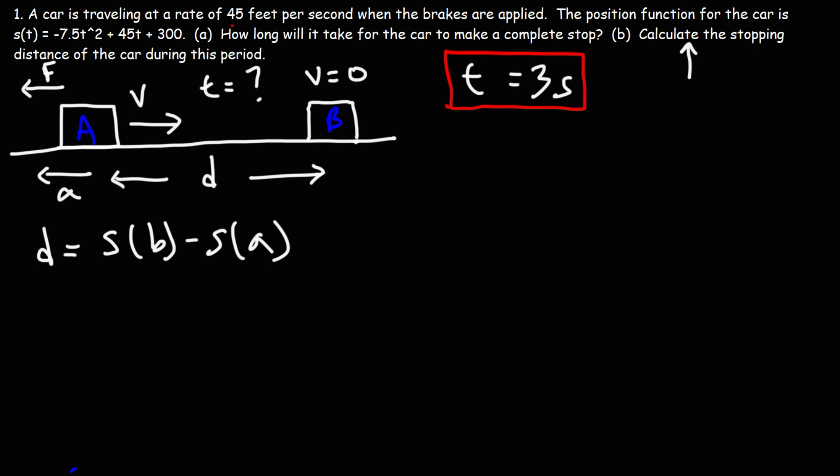The only time these two things are different is if the car or the object changes direction. But in the first three seconds, since it's moving in one direction, displacement will be the same as distance. So to calculate the displacement during the first three seconds, it's going to be S of 3 minus S of 0.